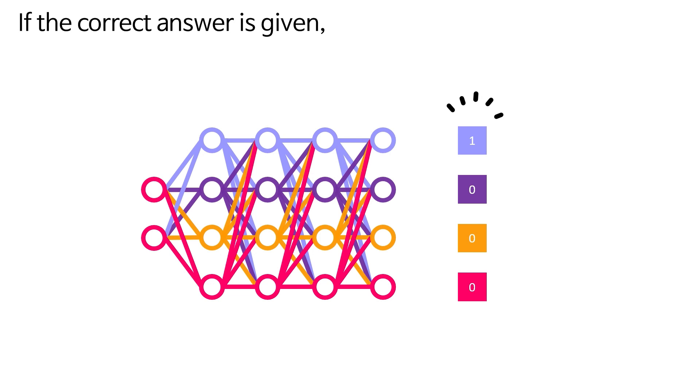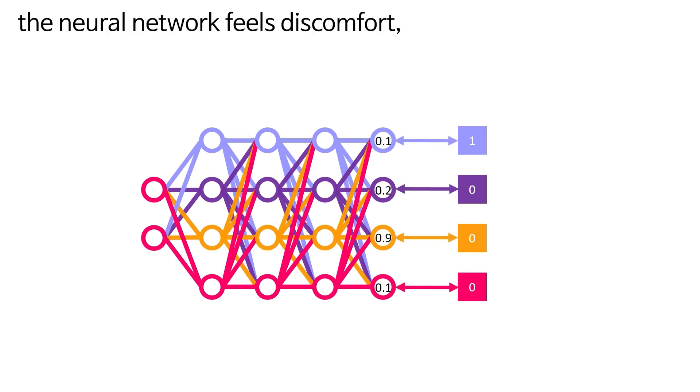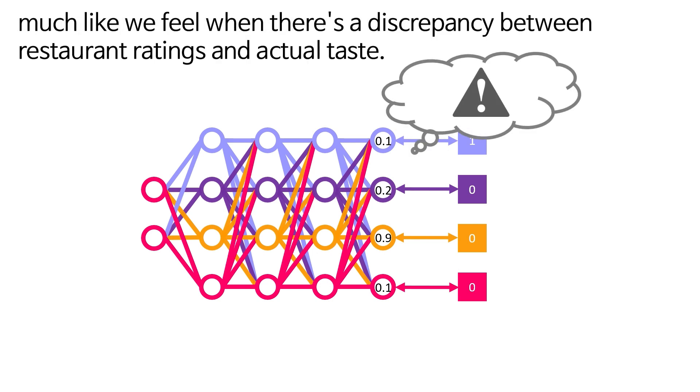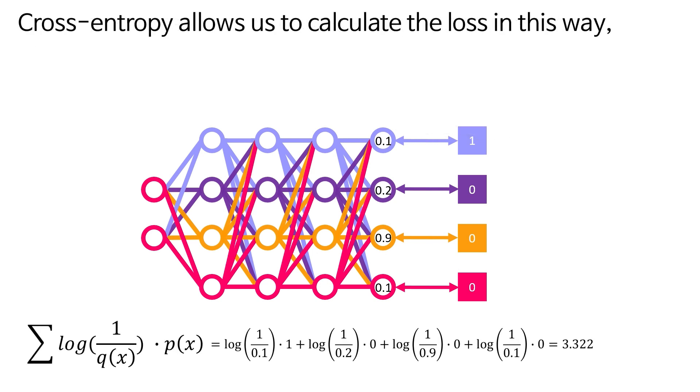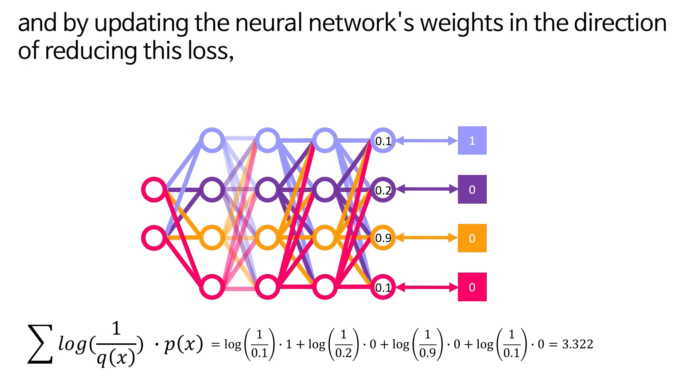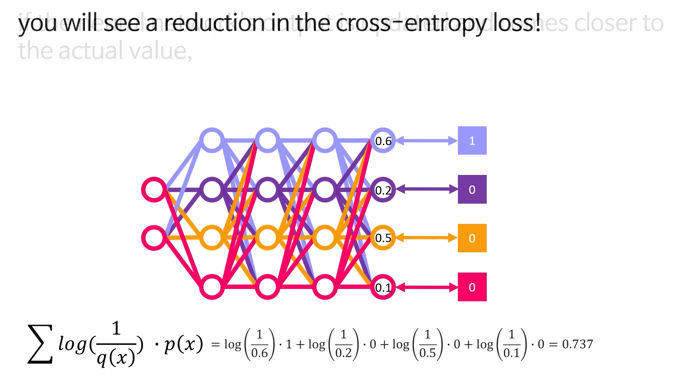If the correct answer is given and the output from the neural network is such, the neural network feels discomfort, much like we feel when there's a discrepancy between restaurant ratings and actual taste. Cross-entropy allows us to calculate the loss in this way, and by updating the neural network's weights in the direction of reducing this loss, if the neural network's output is updated and comes closer to the actual value, you will see a reduction in the cross-entropy loss.